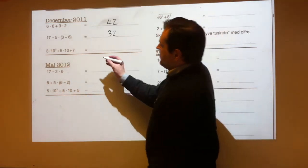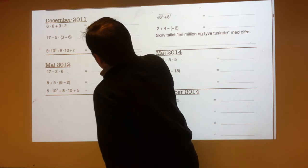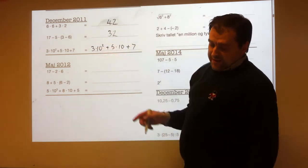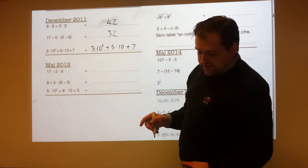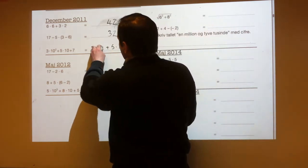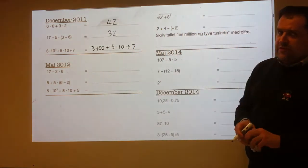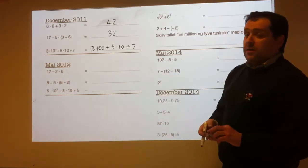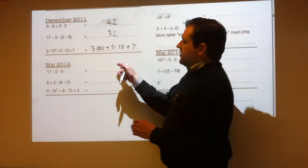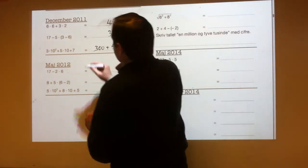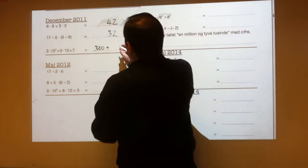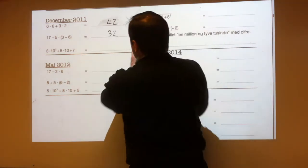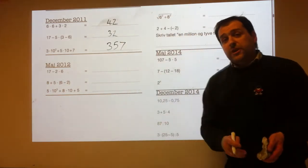Now these ones with powers. You need to do powers before multiplication. So 10 squared is 10 times 10, which is 100 — not to be confused with 10 times 2. So that's the same as 3 times 100 plus 5 times 10 plus 7. Do all the multiplications first: 3 times 100 is 300, 5 times 10 is 50. So we've got 300 plus 50 plus 7, which is 357.